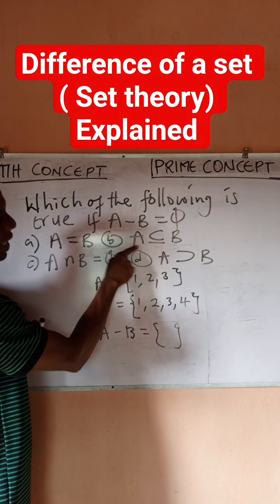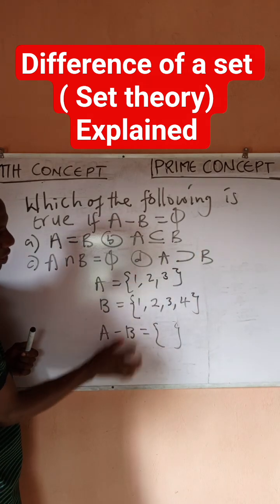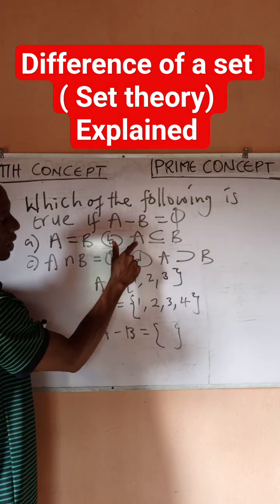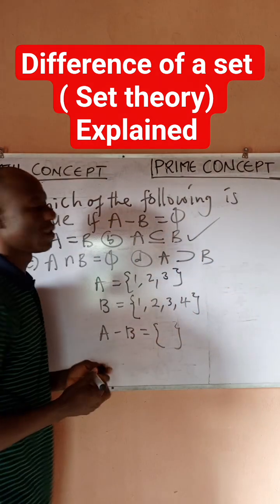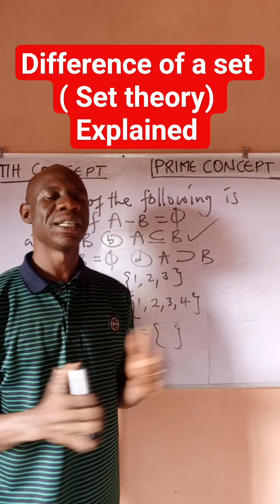It means that A is smaller than B. Just like you can see, A is smaller than B. A is either equal to or is a subset of B. So this option is the correct option. So I believe that this concept is very clear to you.